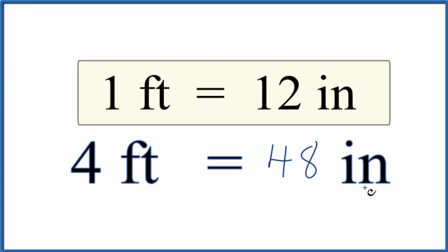There's another way we could do this as well. You could think of it as a ratio. 1 foot is to 4 feet as 12 inches is to X. Cross multiply and solve for X. And you'll find out, again, 4 feet is 36 inches. So some people like to do that.